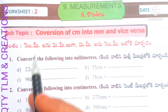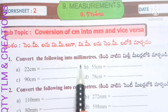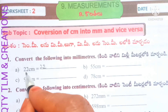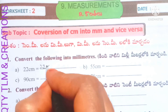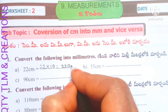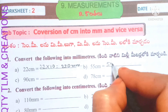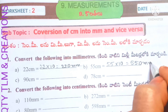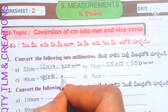Worksheet number two, subtopic: conversion of centimeter into millimeter and vice versa. First, convert the following into millimeters. To convert a higher unit to a lower unit we need to multiply. We know that one centimeter equals ten millimeters. So 22 centimeters equals 220 millimeters. Next, 55 centimeters equals 550 millimeters. Next, 90 centimeters equals 900 millimeters.